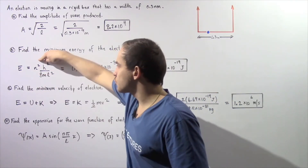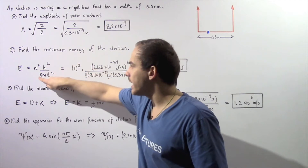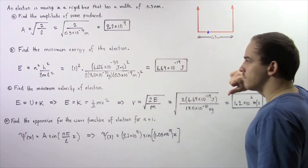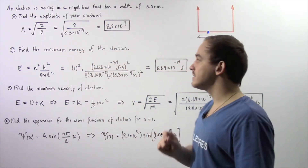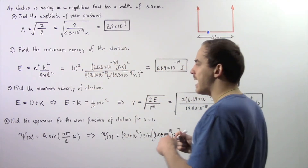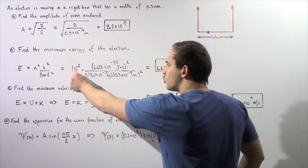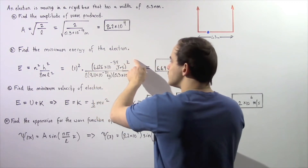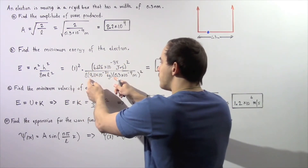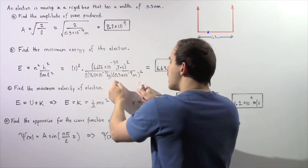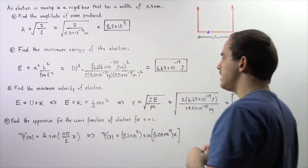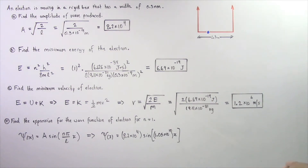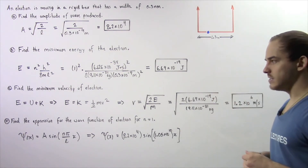The energy is equal to n squared multiplied by h squared divided by 8mL squared, where m is the mass of the electron, L is the width of the box, and h is Planck's constant. Because we're looking for the minimum energy, n equals 1, so the minimum energy is 1 squared times Planck's constant squared divided by 8 times the mass of the electron times the square of the box width. That gives us an energy of about 6.69 times 10 to the negative 19 joules.